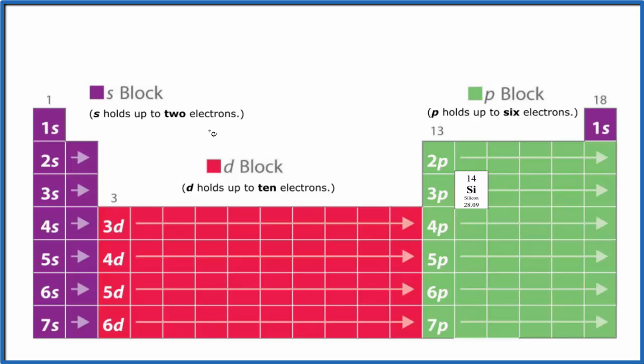We have 1s1, 1s2. And then the s orbitals at first energy level, that's full. Then we have 2s1, 2s2. We go across to 2p, and p holds up to 6. 1, 2, 3, 4, 5, 6, 2p6.